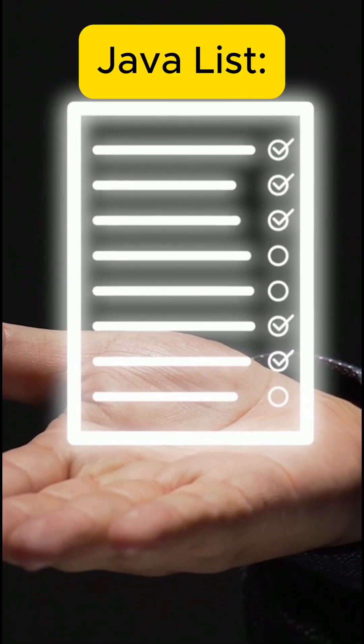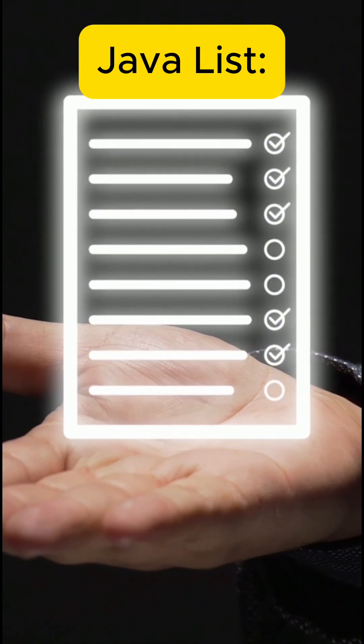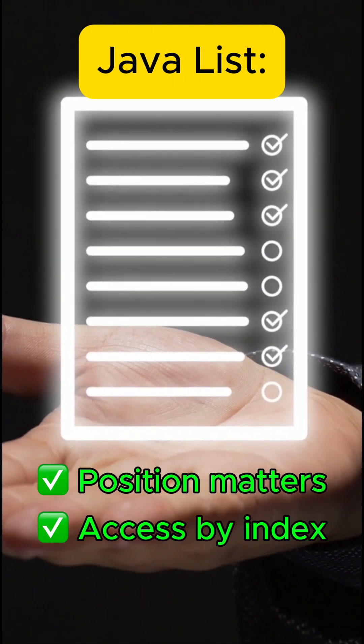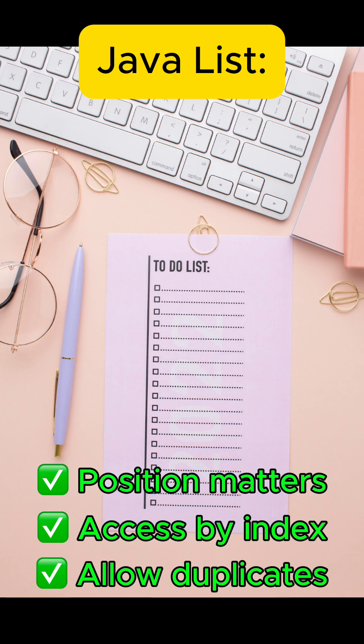First up, list. Use a list when you need to maintain the insertion order of elements, access them by index, and allow duplicates.